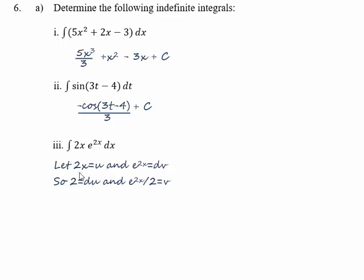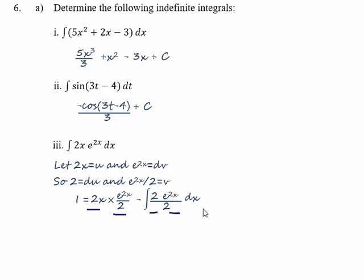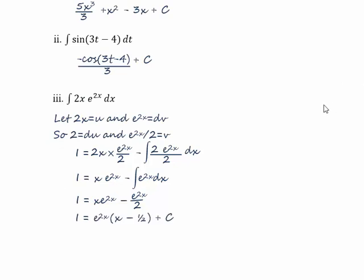If we integrate du, we get 2x — so that's correct. And if we differentiate e to the 2x over 2, we get 2 e to the 2x over 2, and the 2s will cancel — so that's correct as well. Putting these into the integration by parts equation, u·v minus the integral of v·du, with a little simplification that becomes x·e to the 2x minus the integral of e to the 2x dx. We can integrate that directly to get x·e to the 2x minus e to the 2x over 2. Tidying that up, we get e to the 2x times (x minus a half) plus the constant of integration.